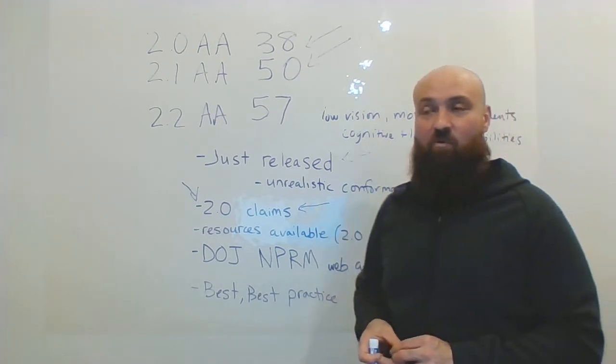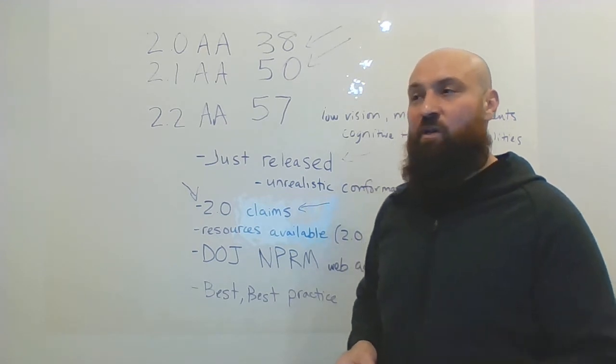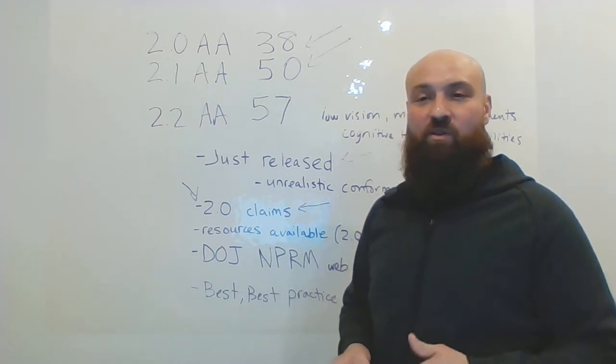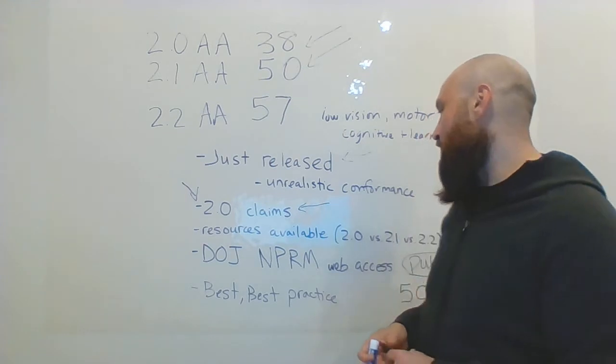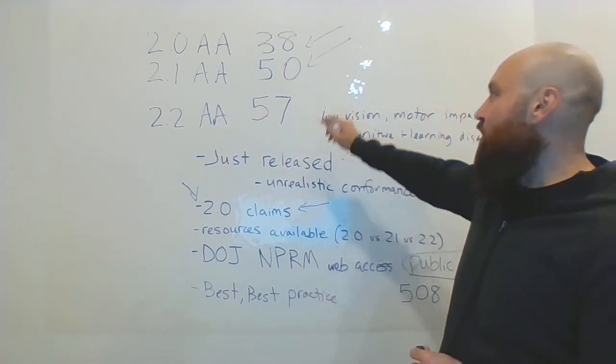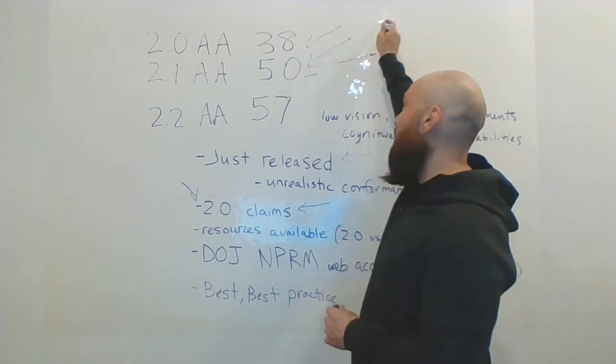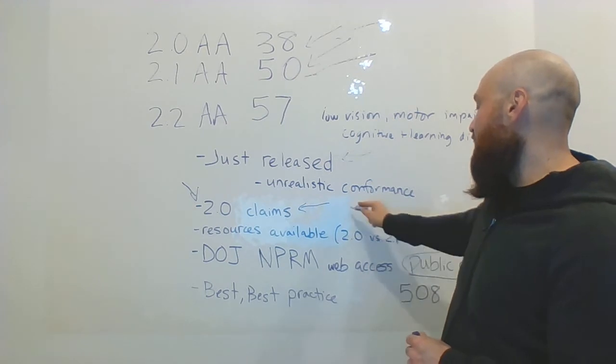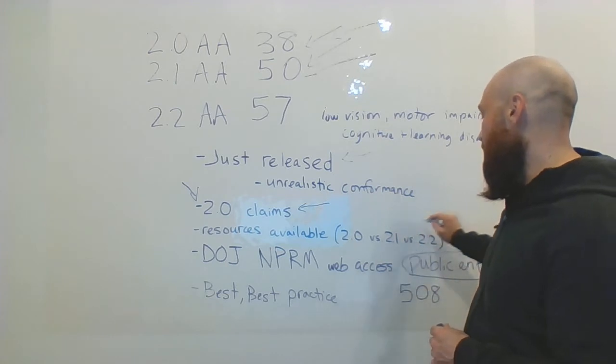There are many entities that are still just working through 2.0. They're getting their re-audits and trying to incorporate those accessibility issues and remediate those. There's just a lot already. Most websites are not even 2.1 conformant, and even for that matter 2.0 conformant. So it depends how much do you have, the developers, the personnel available to be 2.2 conformant?